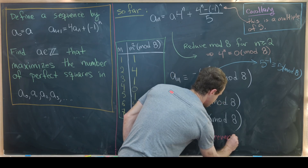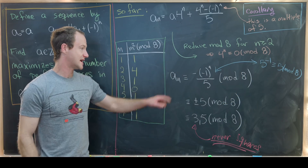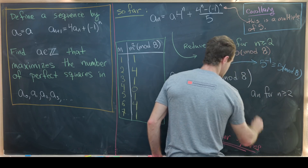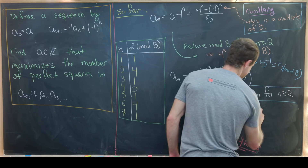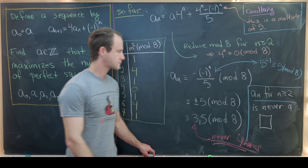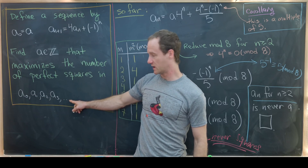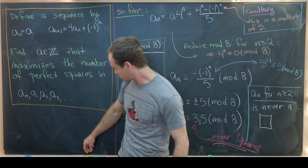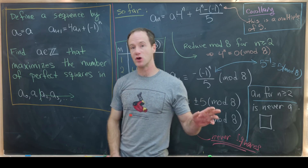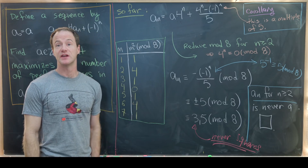So we've shown that a_n for n ≥ 2 is never a perfect square. Since our goal is to maximize the number of perfect squares in the sequence, everything from index 2 onward is ruled out. It is therefore only possible for a_0 and a_1 to be perfect squares.